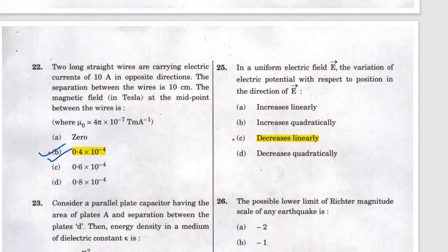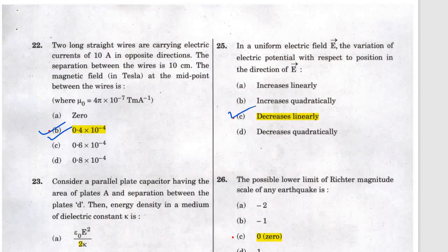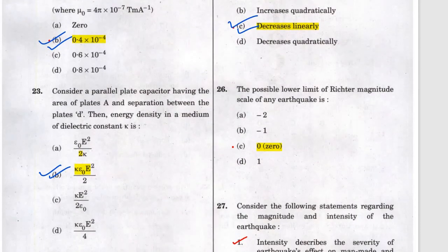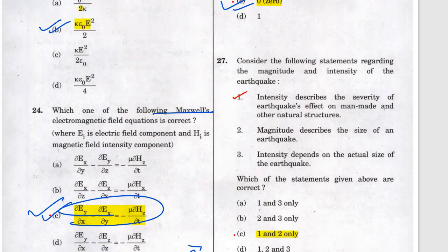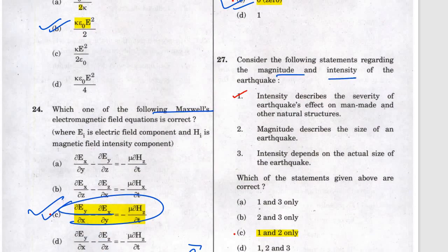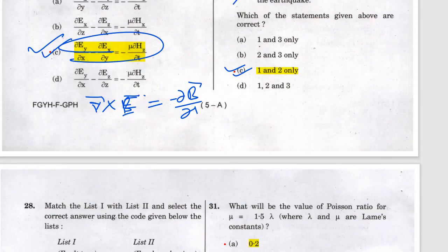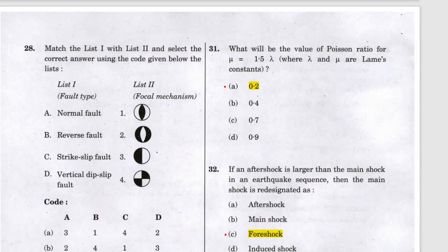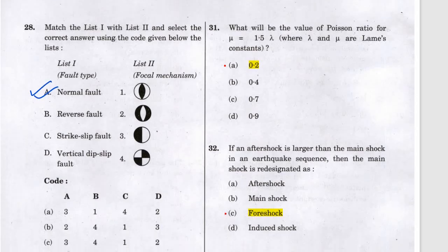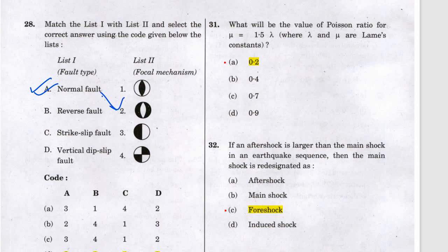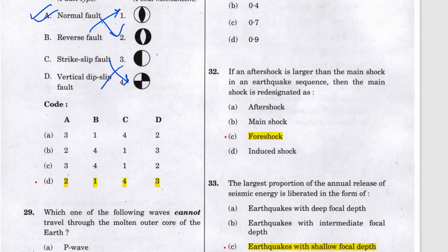Question 25 answer is c, question 26 answer is zero. Question 27: magnitude depends on the actual size — it is the energy — while intensity does not depend on size. Only options one and two apply. Question 28 covers normal fold, reverse fold, and strike-slip fold, as described in William Lorry. The normal fold, reverse fold, strike-slip fold, and vertical fold are shown.